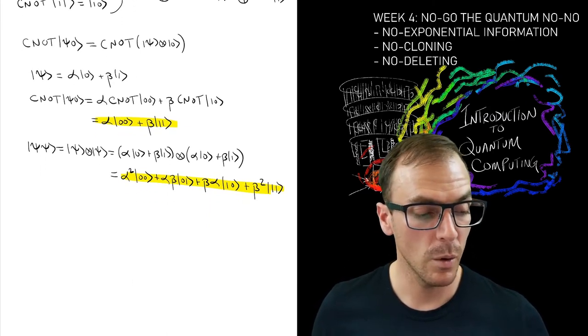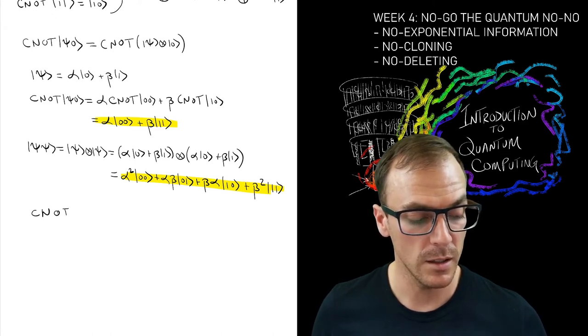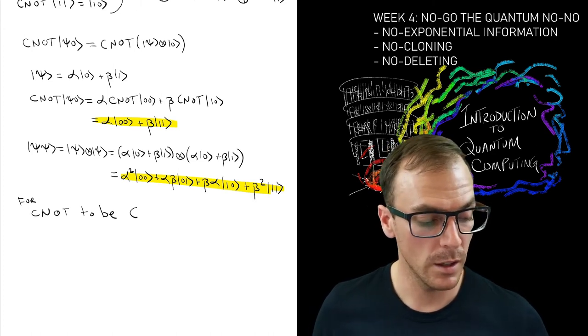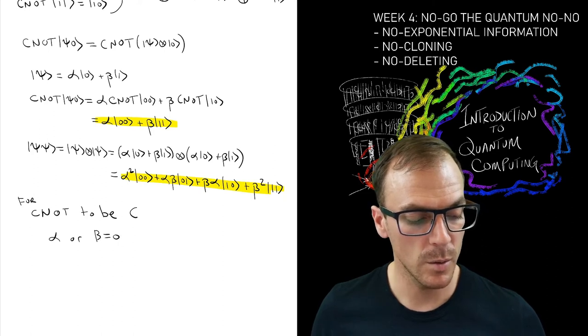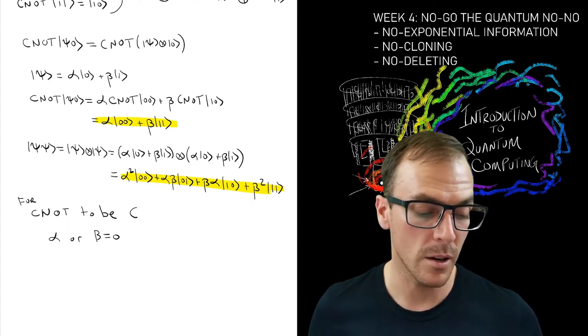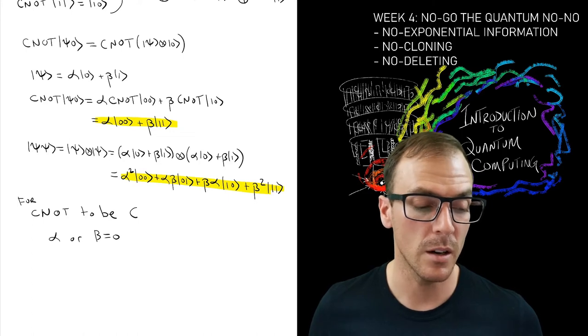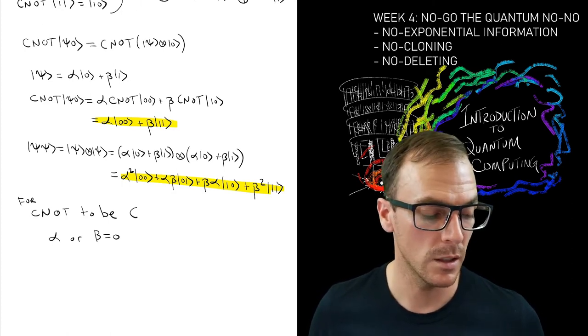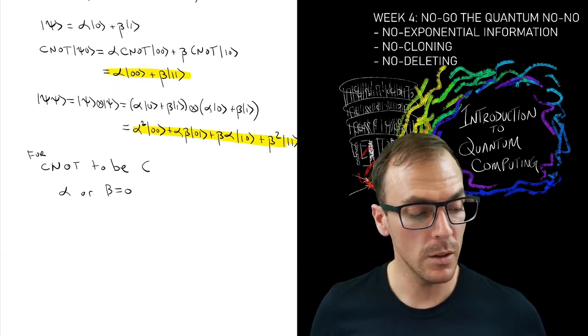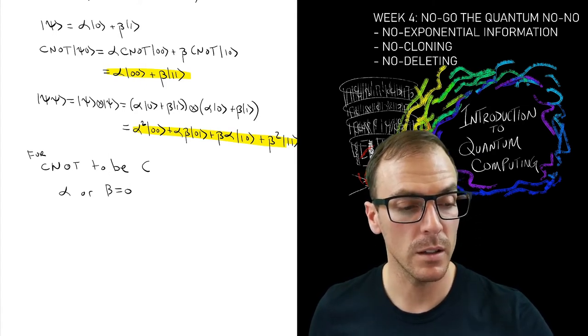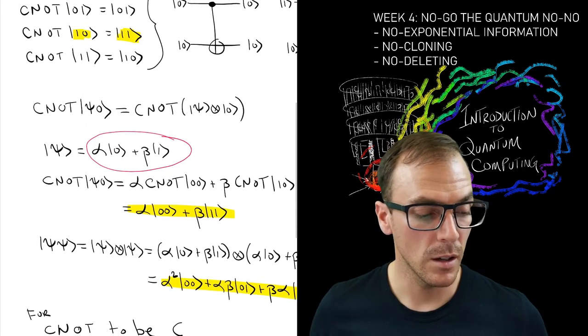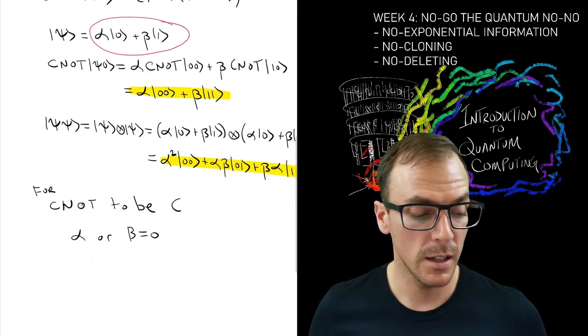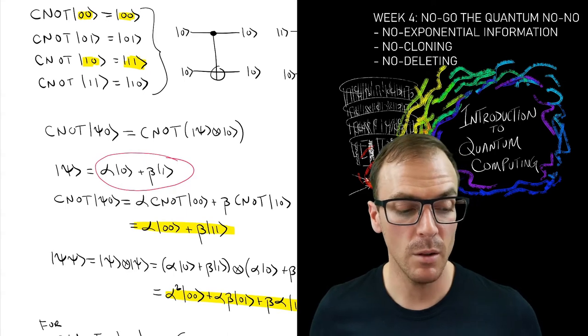Comparing the two equations, we can see that for the CNOT operator to be C, we need α or β to be zero, so that these cross terms in the middle disappear. But we notice that if α or β are zero, then we're left with either |0⟩ or |1⟩.